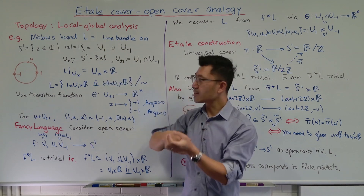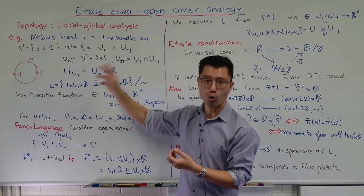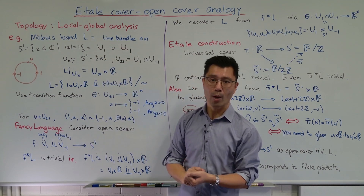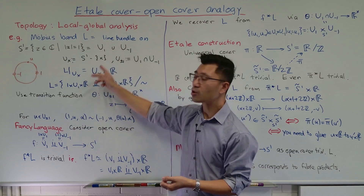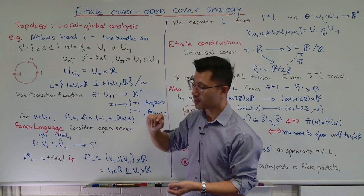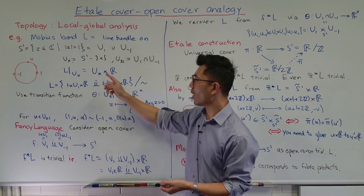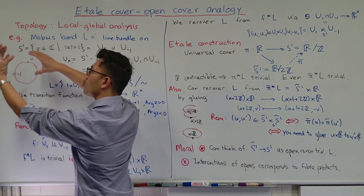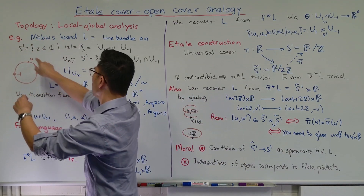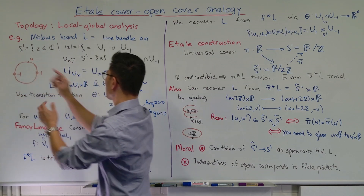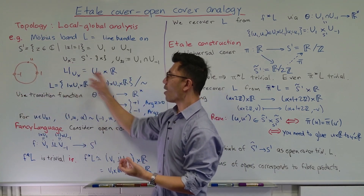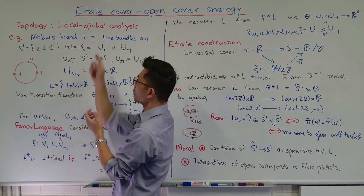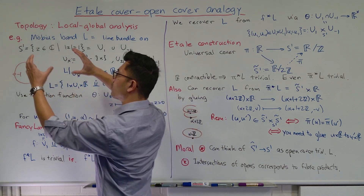The global analysis is how you can, from these local pieces, reconstruct the global object — in this case, L. We'll take these local things which we can consider as something easy to understand. We'll have two of them: U1 cross R and U-minus-1 cross R. So we can think of this as two essentially sheets that sit above U1 and U-minus-1, and we're going to glue them together so that we get the Möbius band. So we'll have two sheets, and on the top we're going to glue them so they just match, but on the bottom we put the twist.